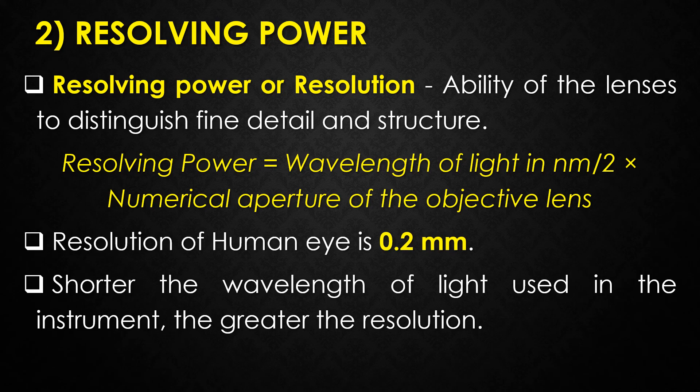The second parameter is resolving power. Resolving power is the power to see details clearly. The resolving power, or resolution, is the ability of the lenses to distinguish fine detail and structures. The resolving power is calculated using the wavelength of the light in nanometers divided by two times the numerical aperture of the objective lens.